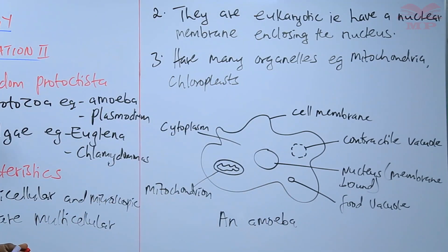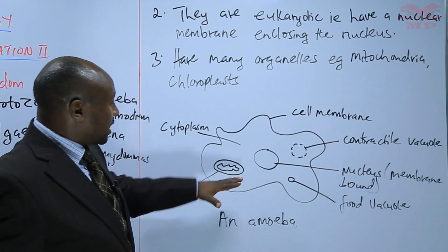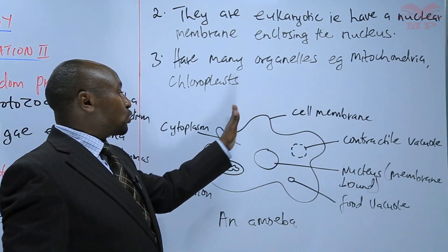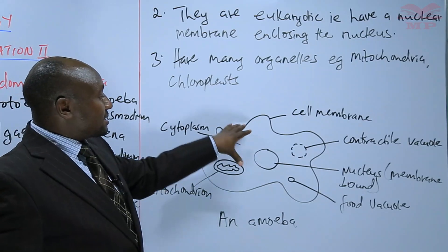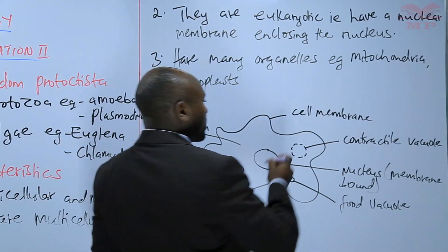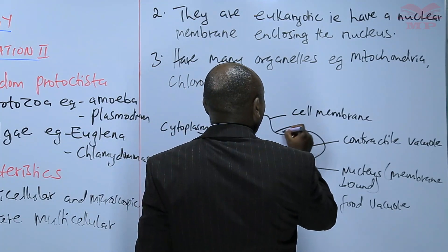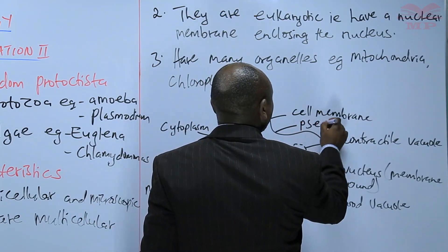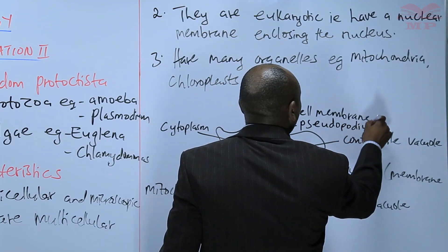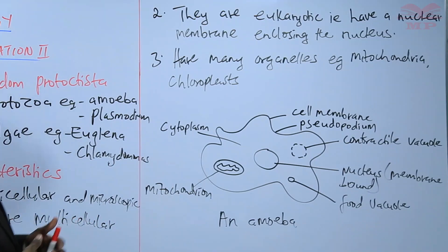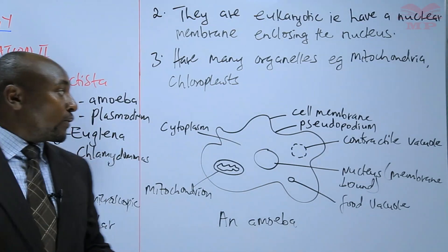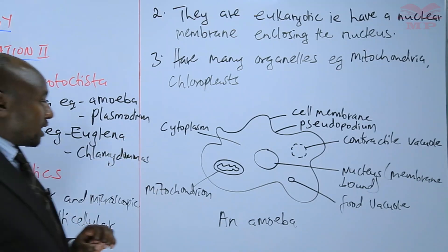Another point to note is that the cell membrane of the amoeba is not uniform — it has some projections. Those projections are referred to as pseudopodia. One projection is called a pseudopodium. We shall look at that further as we continue with the other characteristics.